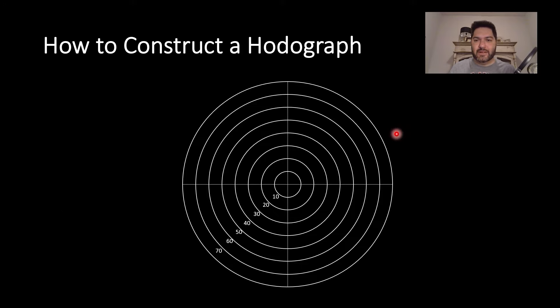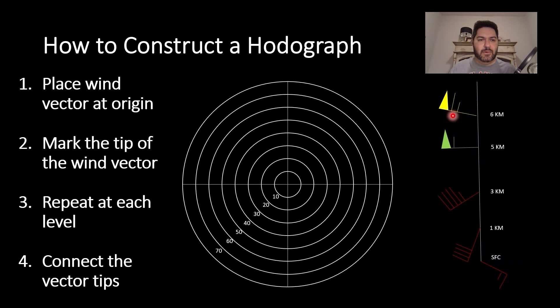Let's construct an example hodograph. In this case, you see a wind profile that's color coded for its height. The surface wind is southeast at 15 knots, one kilometer is southwest at 40 knots, three kilometers is west-southwest at 45 knots, five kilometers is westerly at 55 knots, and finally six kilometers is west-northwesterly at 65 knots.